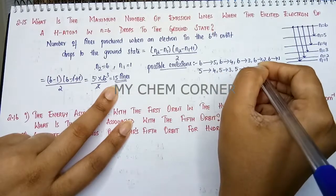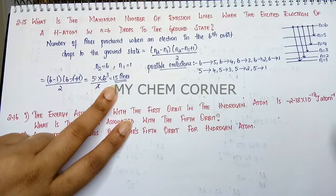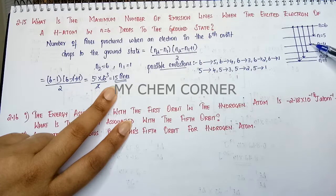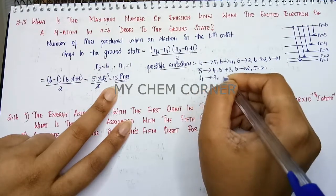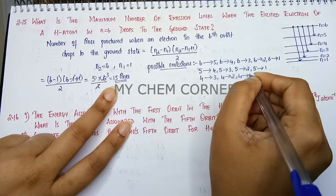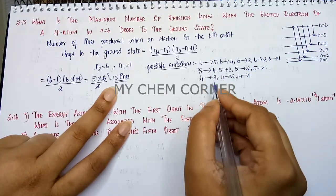Now when we say that the electron is falling from 6 to 4 or 5 to 4, from 4 further it can go down. So we can also say 4 to 3, 4 to 2, 4 to 1.